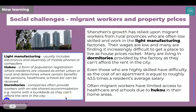The next slide considers the social challenges of living and working in Shenzhen. The city's growth has relied heavily on migrants coming from the countryside to work in manufacturing. However, migrants often find their wages are low and can't afford housing, so they're offered places in dormitories — shared accommodation with other workers. They also often have limited access to healthcare because of a rule known as hukou, which affects whether they can access those services.